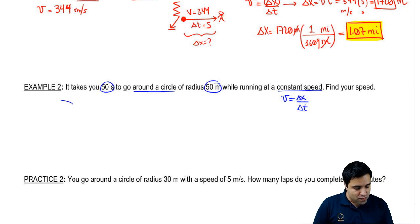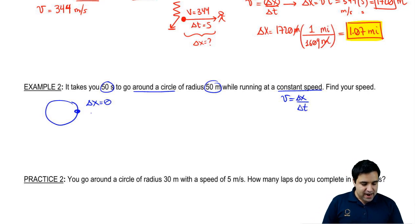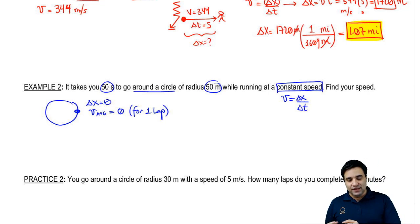Here's the tricky part. If you go around a circle, your displacement is actually zero. And your average velocity for an entire lap is also zero for one lap because you're back at the same place. That's why they talk about a constant speed.